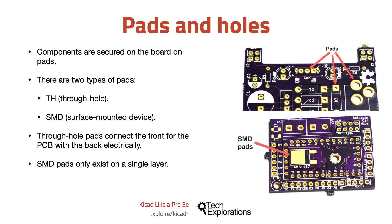Apart from the two varieties described above, pads also come in several shapes. Most often you'll see round pads, but rectangular and oval shapes are also possible. Using KiCad you can create such pads and control their geometry to the extent that your PCB manufacturer allows.